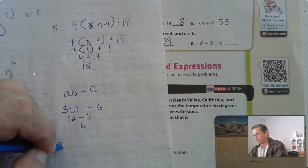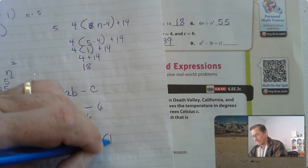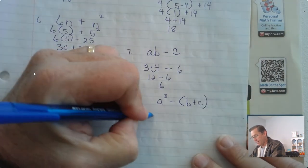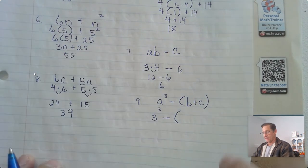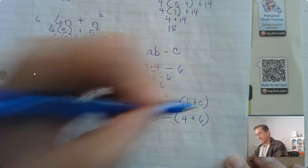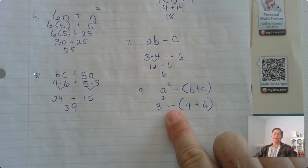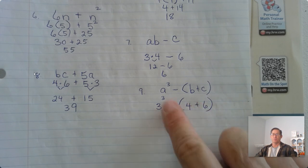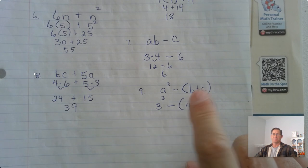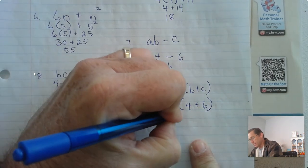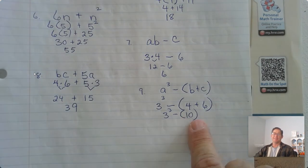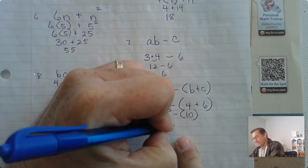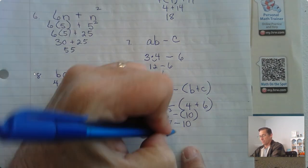Number 9: we have a cubed minus the sum of b and c. a was 3, so substitute 3 for a, 4 for b, and 6 for c. So we have 3 cubed minus the sum of 6 and 4. We have exponents, subtraction, and parentheses — do what's inside parentheses first. So we have 3 to the third minus 10. Now exponents: 3 to the third is 3 times 3 times 3, which is 27. So we have 27 minus 10, and we get 17.